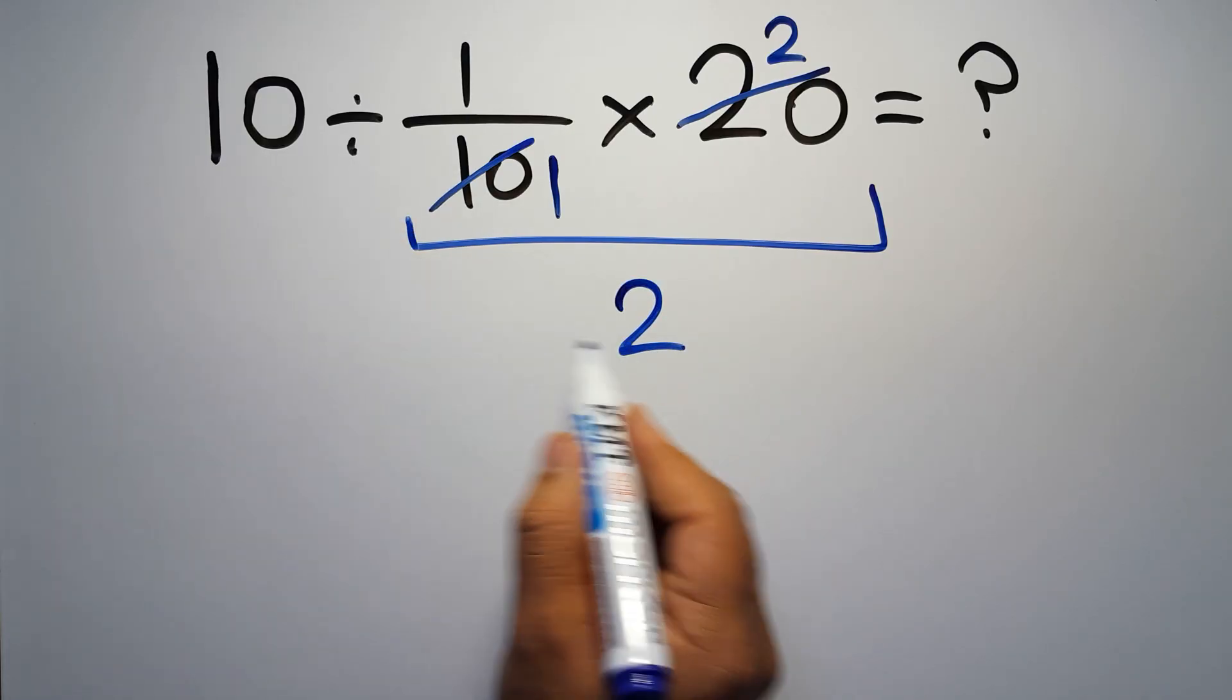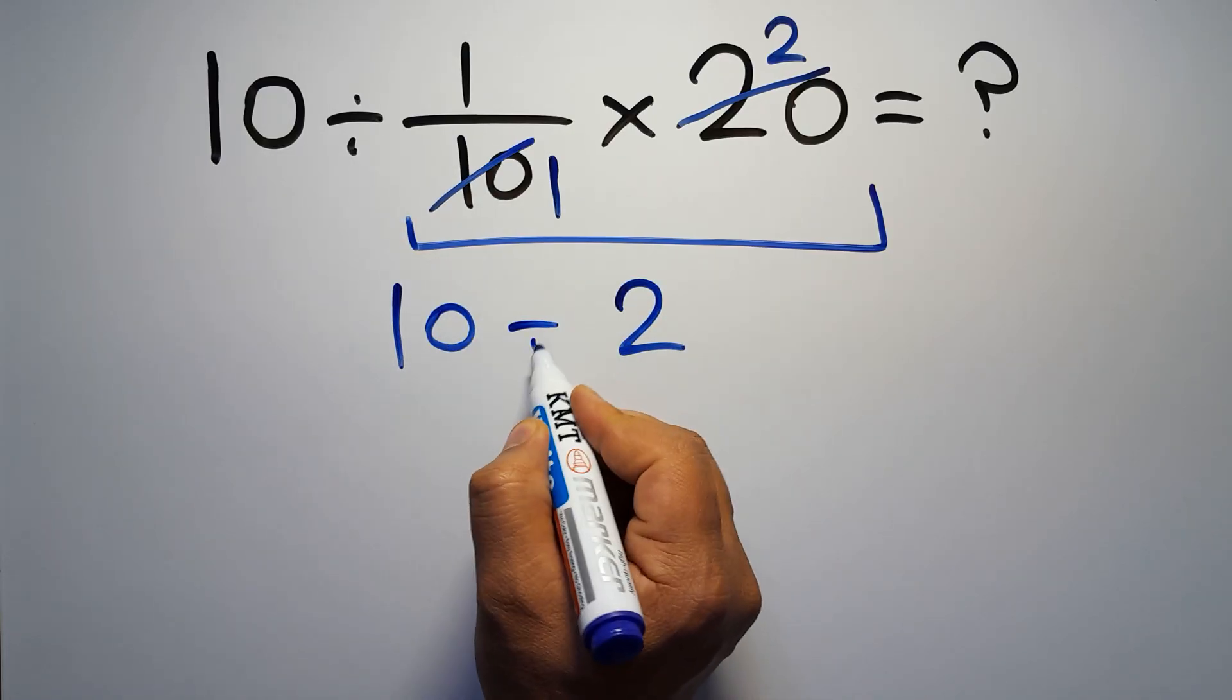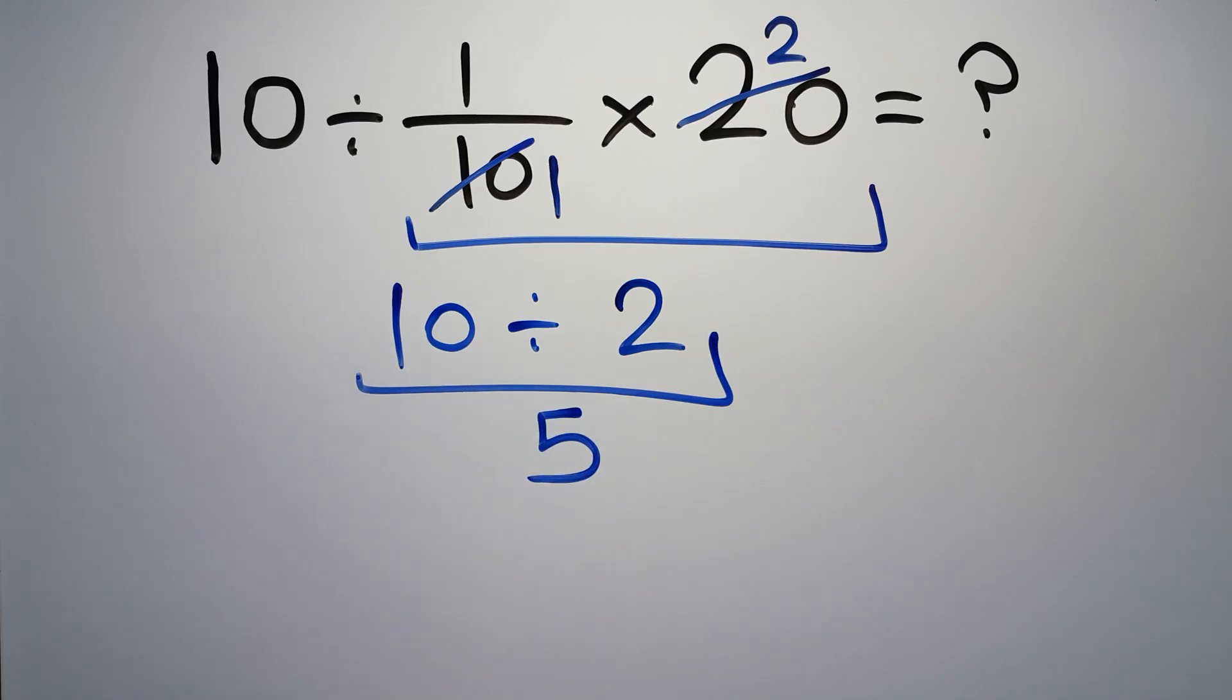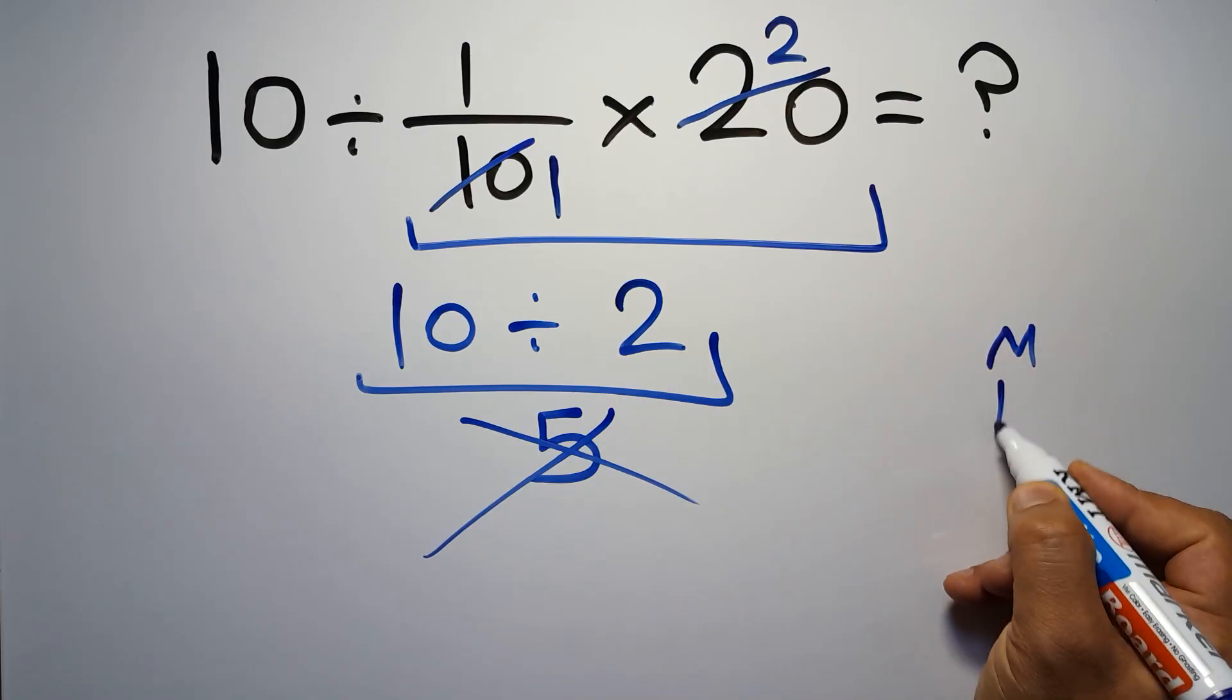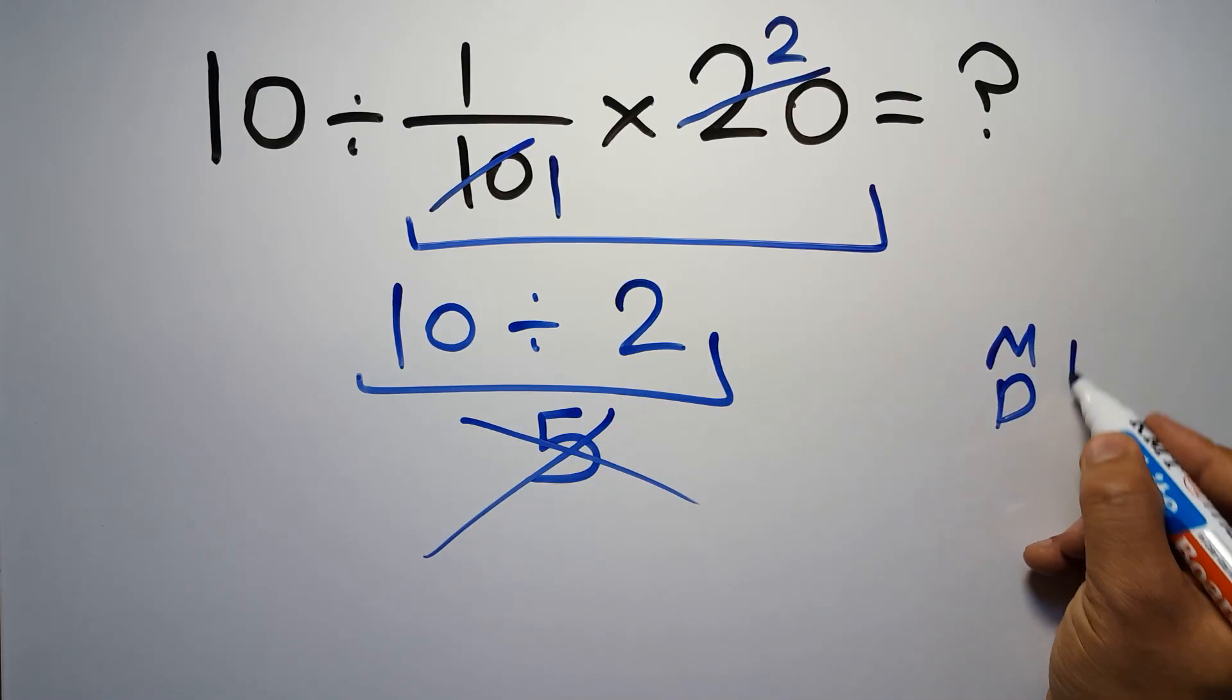And 10 divided by 2 gives us 5. But this answer is not correct. Because according to the order of operations, multiplication and division have equal priority, and we have to work from left to right.